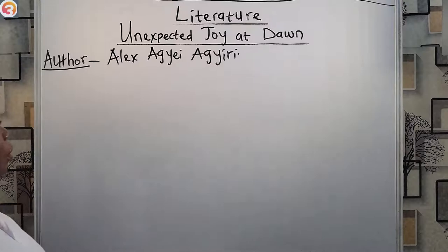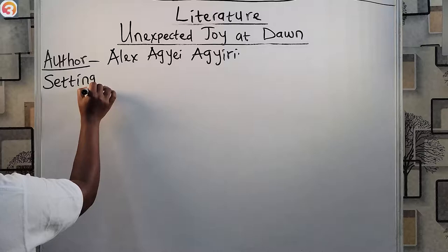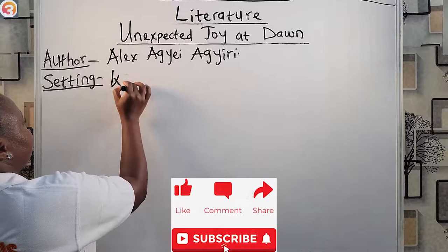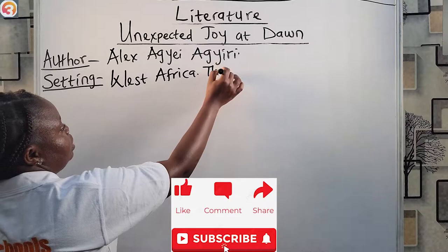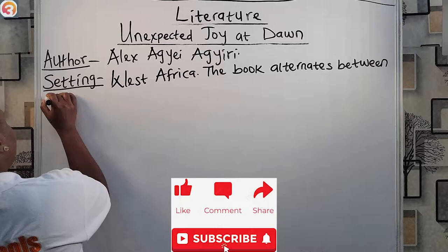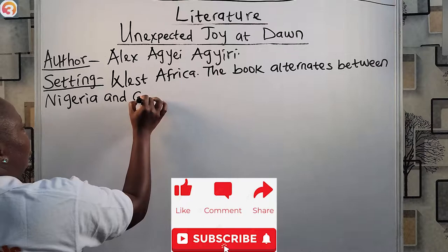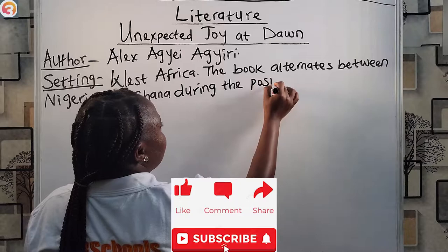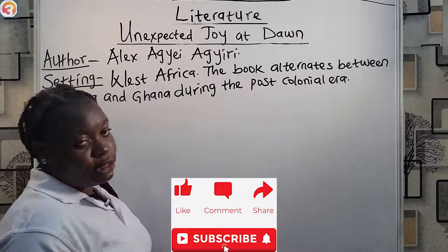Now we'll look at the setting. Take note: setting has to do with location and time. The book 'Unexpected Joy at Dawn' is set in West Africa, and the book alternates between Nigeria and Ghana — those are the two major West African countries talked about in the book. In terms of time frame, this was during the post-colonial era.